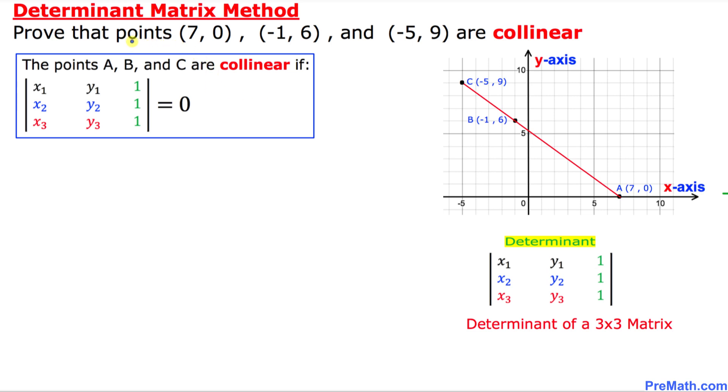And let me go ahead and call these three given points. I'm going to call the first point as x1, y1 coordinates. The second one is going to be x2, y2. And the third one is going to be x3, y3.